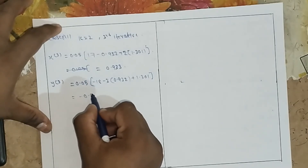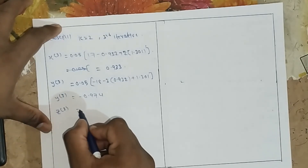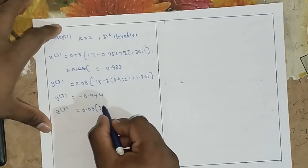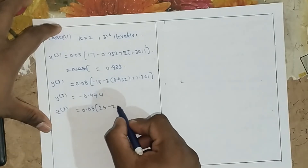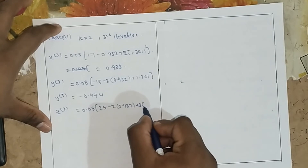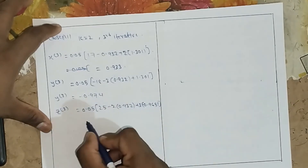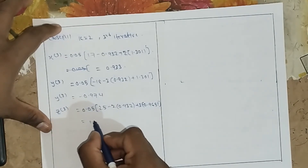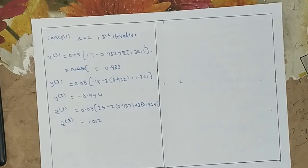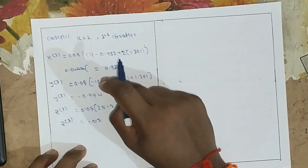For z(3): 0.05 into (25 minus 2 into x(2) of 0.932 plus 3 into y(2) minus 0.965), giving approximately 1.01. The values are converging: x approaches 1, y approaches minus 1, z approaches 1.